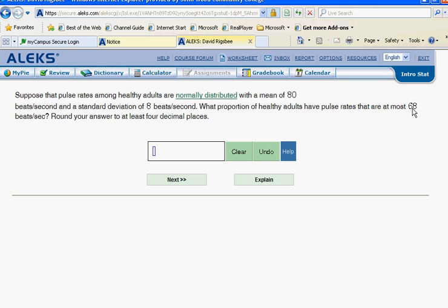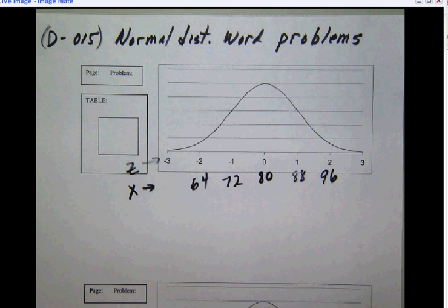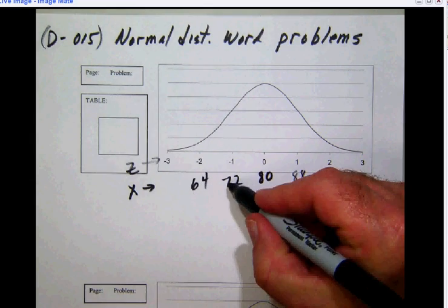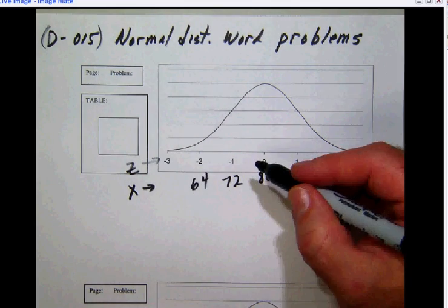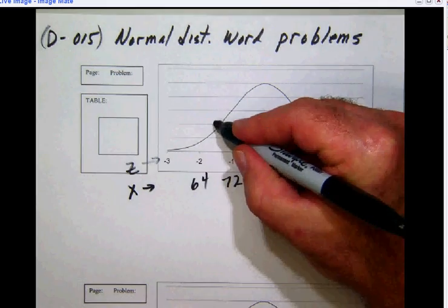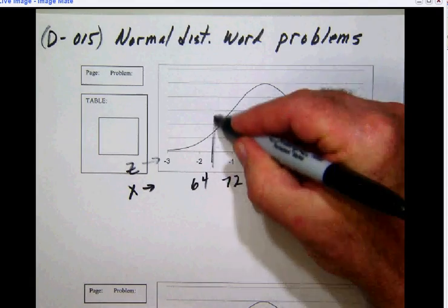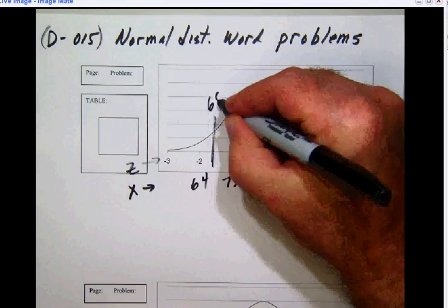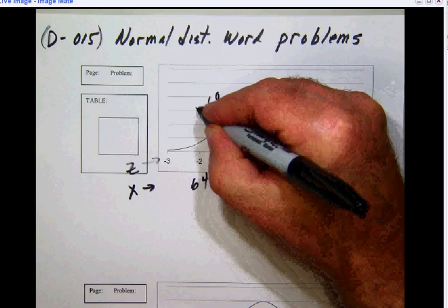So let's go in here and take a look at our notes once again. So what we'll do here is we'll take a look at this 68. So here's 64, here's 72, and so 68 is going to be right in there someplace. So that's going to be our 68, and of course that is a particular value of our pulse rate, so that's going to be an x-score.